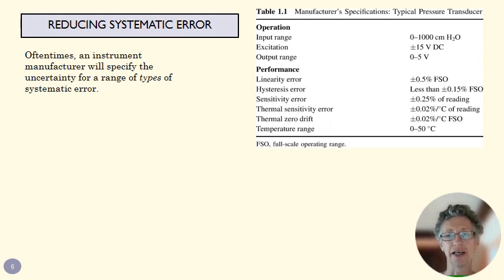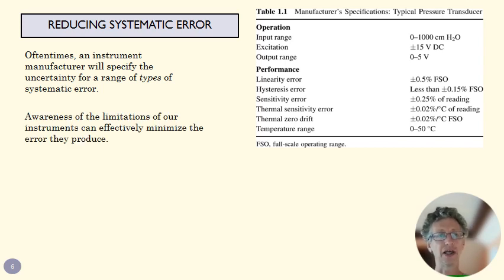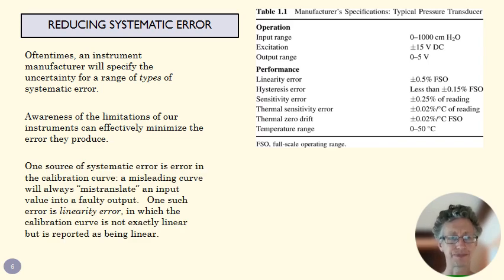Now, more specifically, a higher-end instrument is going to give us not just a 5% for everything systematic, but it's going to talk about the types of systematic error. And we want to talk a little bit about what those might look like because it can be helpful to know where is that systematic error coming from? How is the calibration curve not faulty, but irregular? Not going to be always exactly what we want.